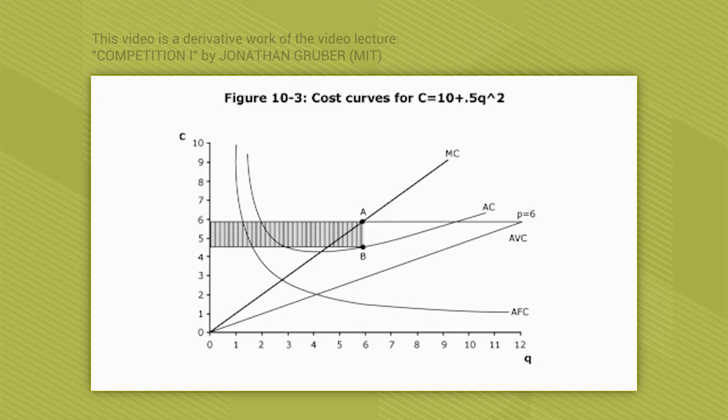Here's the key. You cannot choose a production level that produces a bigger rectangle than this. So if you produce 7, your rectangle would be longer, but the gap between price and average cost would be smaller. So your total rectangle size would fall.